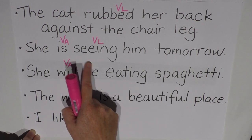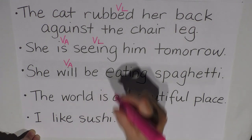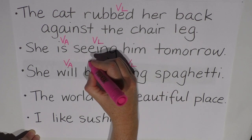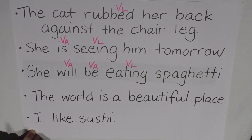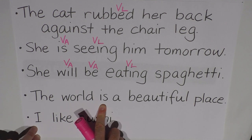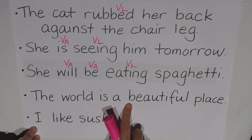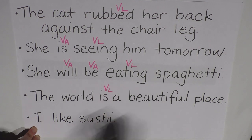So 'seeing' — she is seeing — we said that was lexical. And she will be eating something she's doing, with -ing on the end, so 'eating' is the lexical verb. That means 'be' must be a primary auxiliary verb. So in this sentence there are two auxiliary verbs and one lexical verb. Now, the world is a beautiful place. Here's 'is'. It can be a primary auxiliary or a lexical verb. I look at either side and there is no other verb — it's the sole verb all by itself. Auxiliary verbs cannot be by themselves, but lexical verbs can. So 'is' in this situation is a lexical verb.